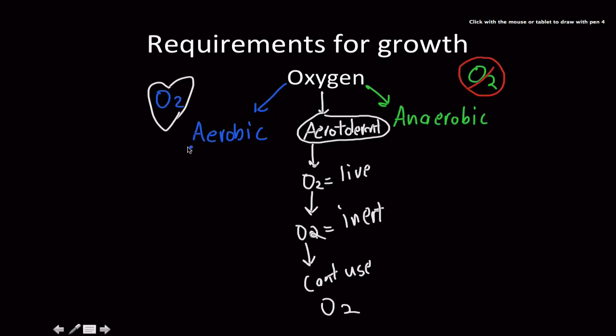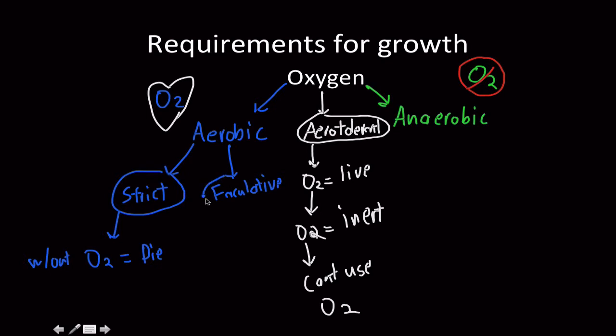Now let's break these two categories down. So the aerobic bacterium, there are two kinds that we can have. There are the strict and then facultative. If something is a strict aerobe it needs oxygen O2, needs it. Without O2 this bacteria will die.